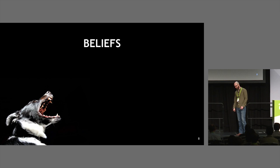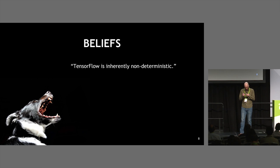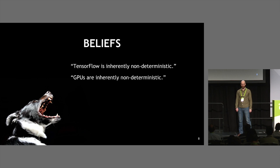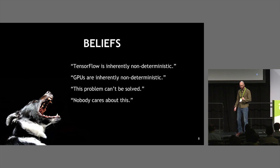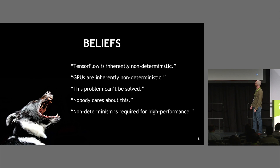When I started this project, people said many things they really believed but weren't grounded in data. There was the belief that TensorFlow is inherently non-deterministic — like a little gremlin inside. Also that GPUs are inherently non-deterministic. Someone told me this problem can't be solved, which is amazing because it has been solved. And then the real killer: nobody cares about it. It also took a lot of effort to keep going. And the belief that non-determinism is required for high performance isn't really true, as the numbers will show. And just setting the seeds — well, that doesn't actually work.